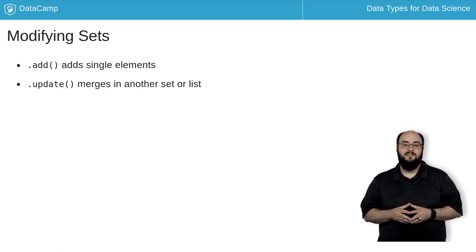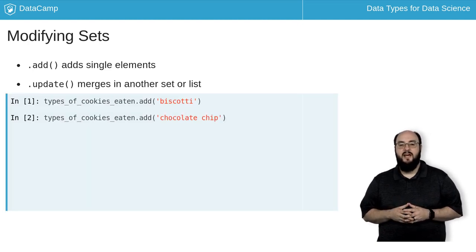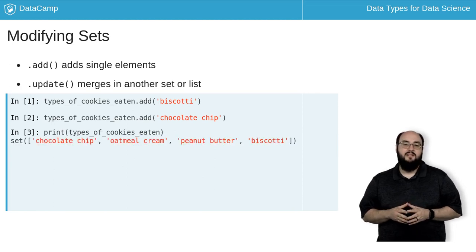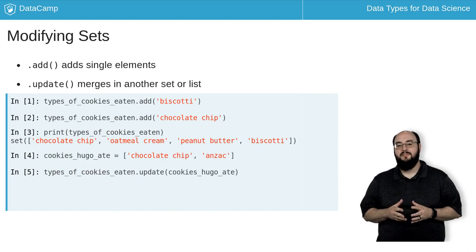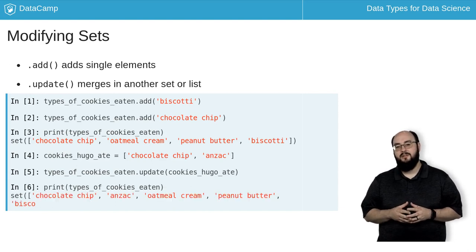While making the first two sections of this chapter, I ate two more cookies, a biscotti and a chocolate chip cookie. So, let's use the add method to add those to our set and to print the result. Finally, Hugo had some cookies, so let's use the update method to add the cookies he ate to our set and print them.